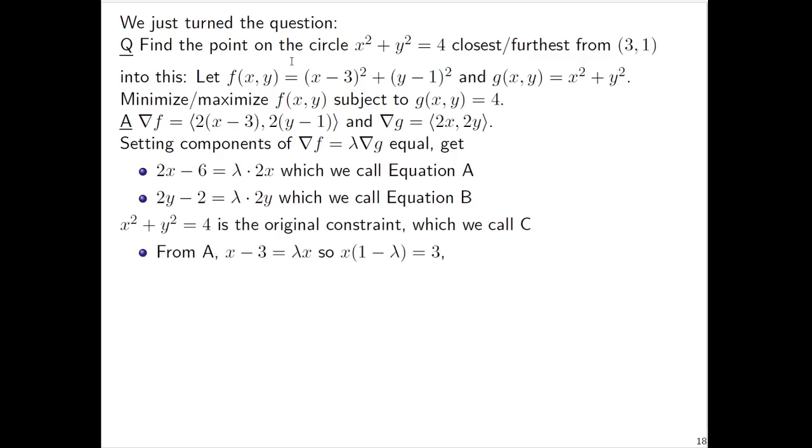From A, dividing by 2, we have x - 3 = λx. Getting the x terms on one side, x - λx = 3, and factor out x. This looks like funky algebra, but it's going to work out. This is going to show that λ can't be 1.